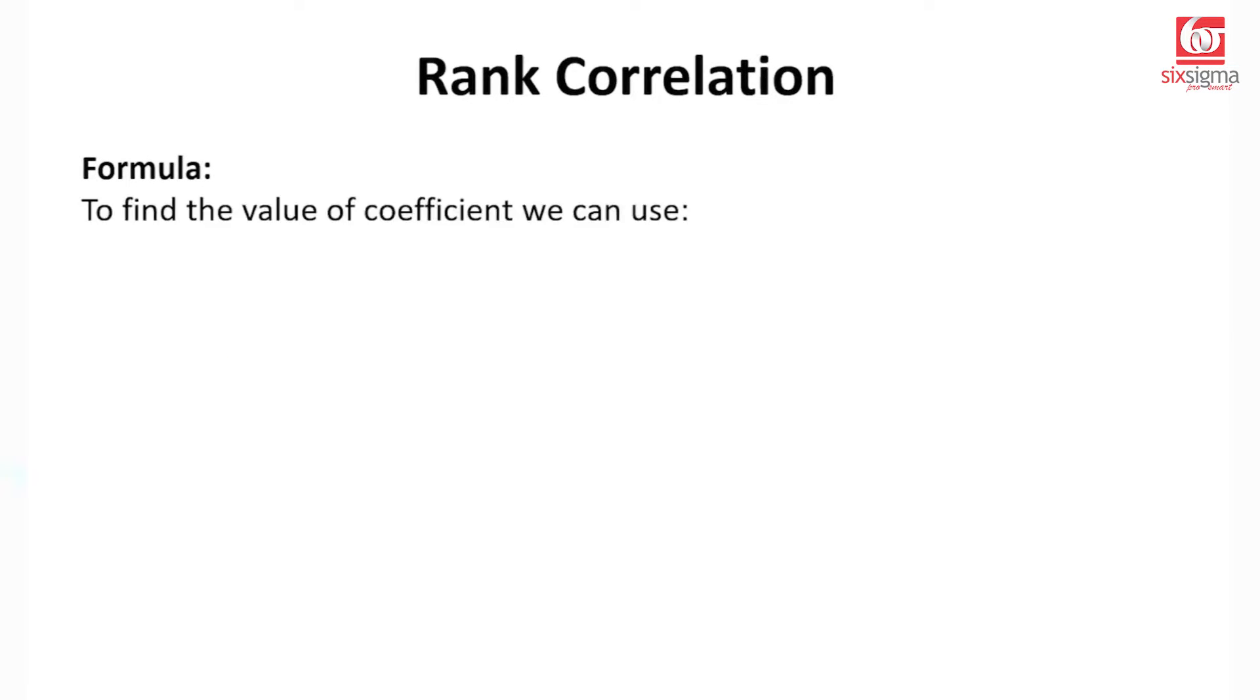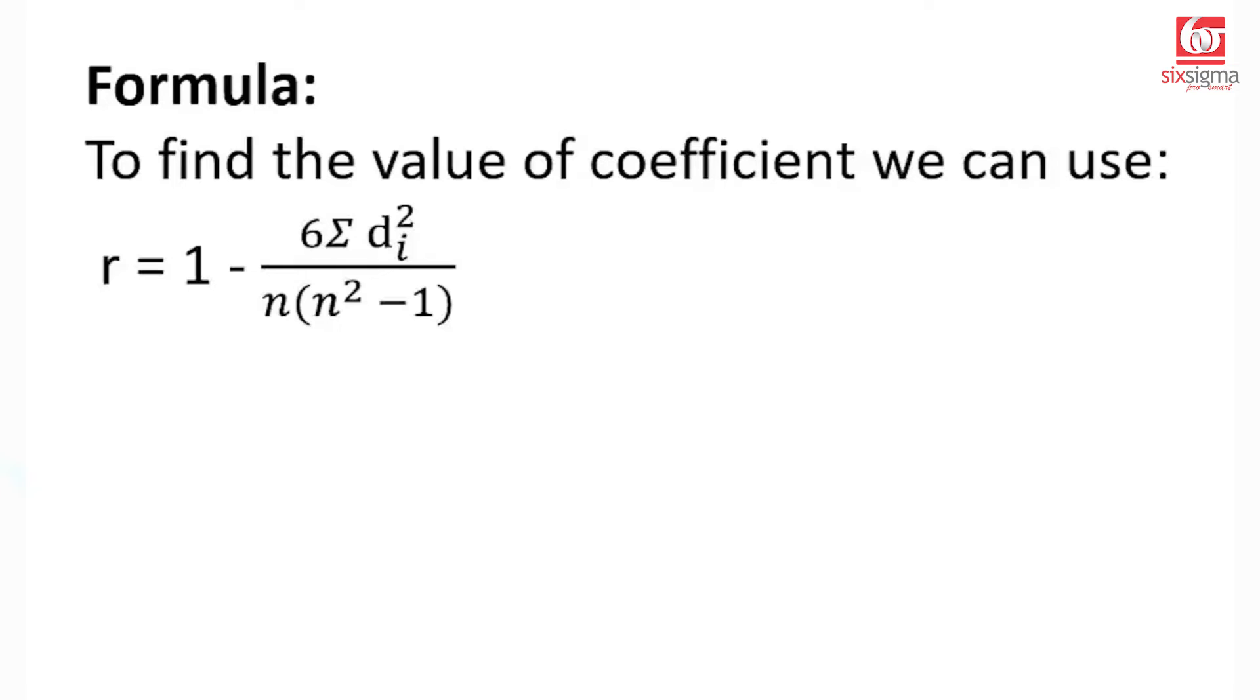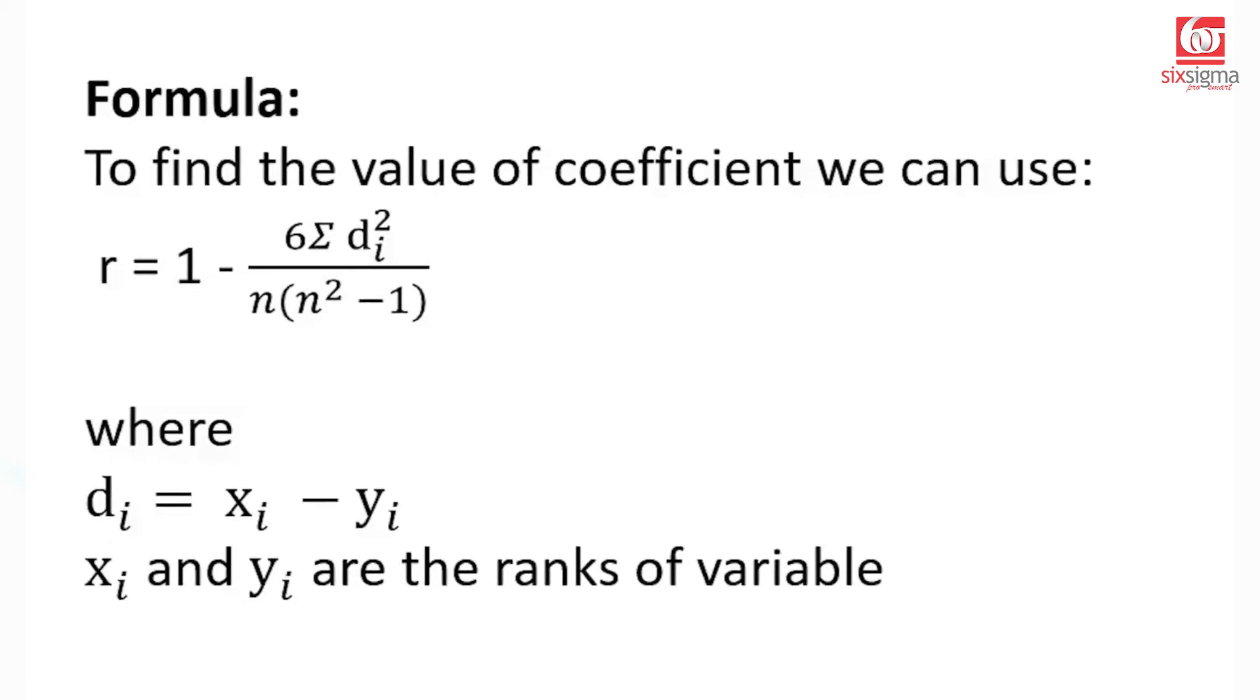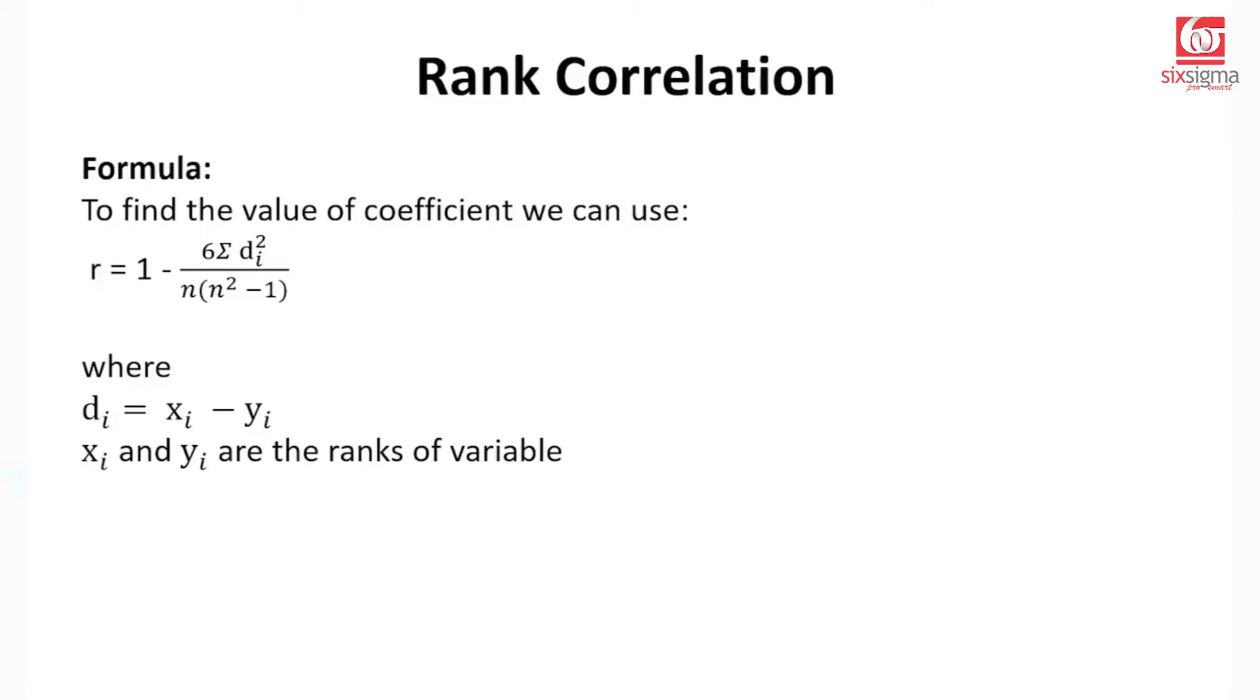The formula for Spearman's rank correlation is: r = 1 minus 6 times the summation of di squared divided by n multiplied by n squared minus 1. di is the difference between the ranks, the ranks of the variable x and corresponding ranks of the variable y. And d essentially represents their differences.